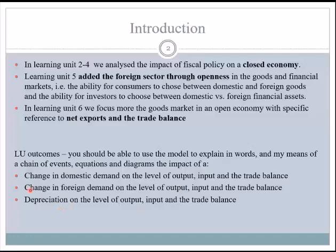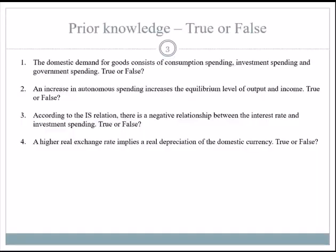Some things you need to have a grip of before starting this learning unit. The domestic demand for goods consists of consumption spending, investment spending, and government spending — that is true. The demand for goods in the economy consists of those units.